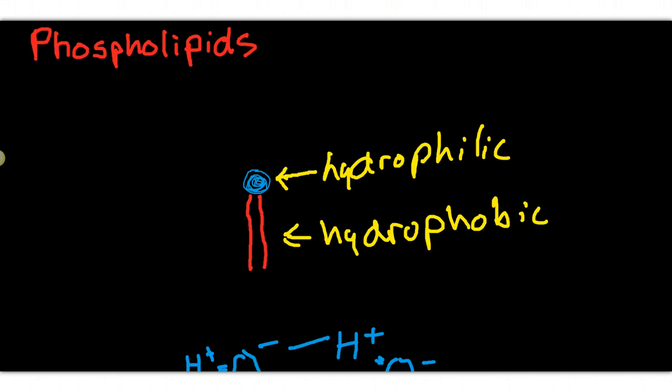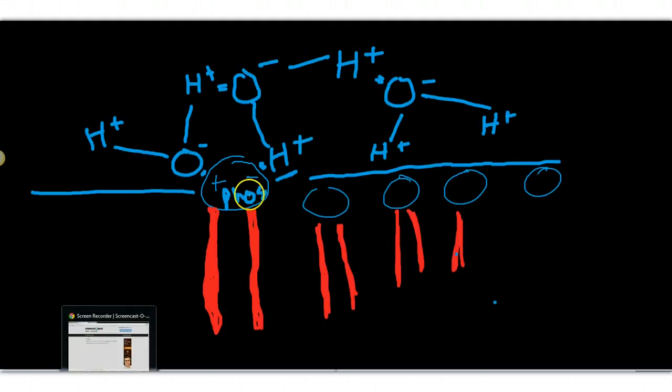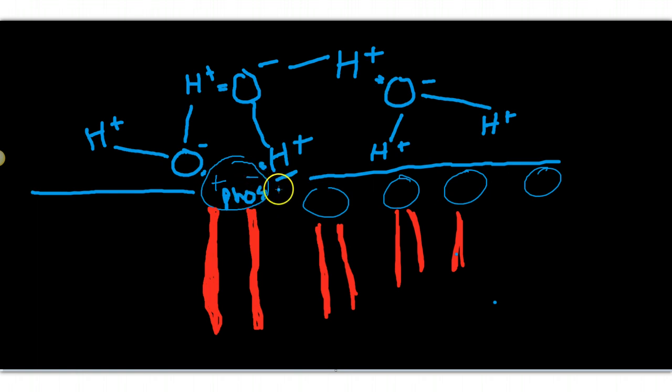The hydrophilic end is made up of a phosphate group that is polar. It has a positive charge on one part and a negative charge on the other part. And then it has these two tails here that are made up of glycerol and fatty acid chains, and these are non-polar.